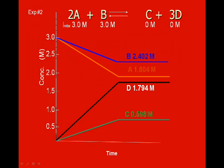We could look at a graph that describes that as well. Here we started with no C and D. We started with the same concentrations of A and B, and the system came to equilibrium after some time here.